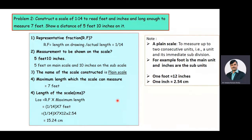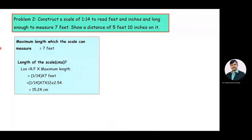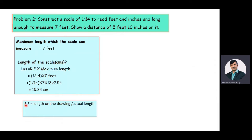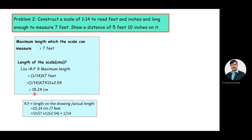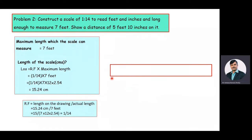We calculate the scale length in centimeters because for drawing purposes we use a ruler that is in centimeters. The maximum length the scale can measure is 7 feet and the length of the scale value is 15.24 centimeters. RF equals length on the drawing (15.24 cm) divided by actual length (7 feet), confirming RF = 1 by 14.